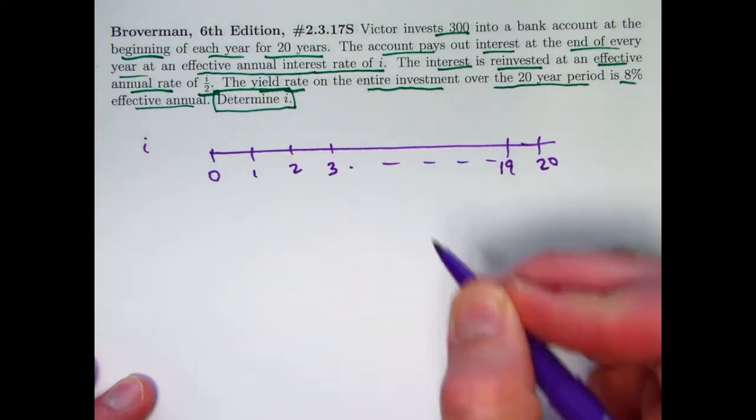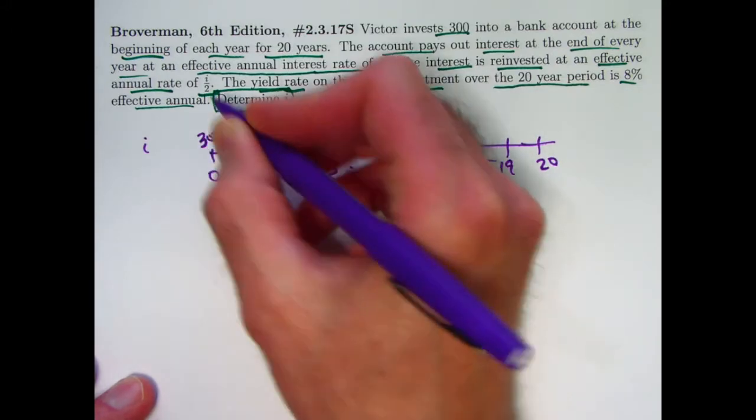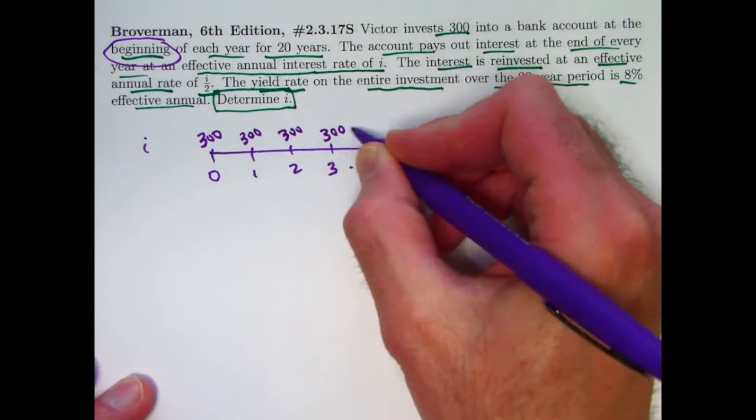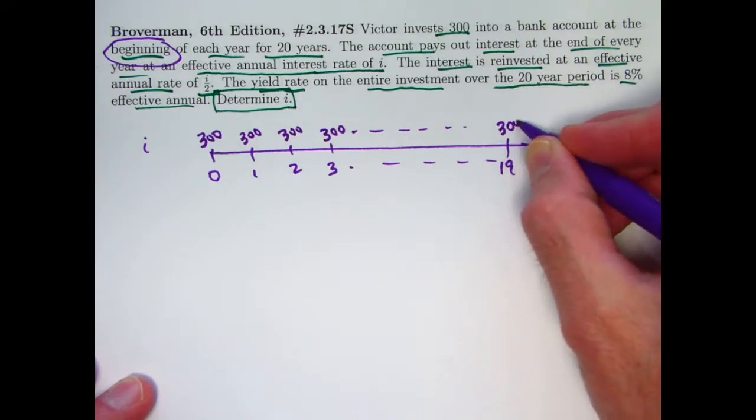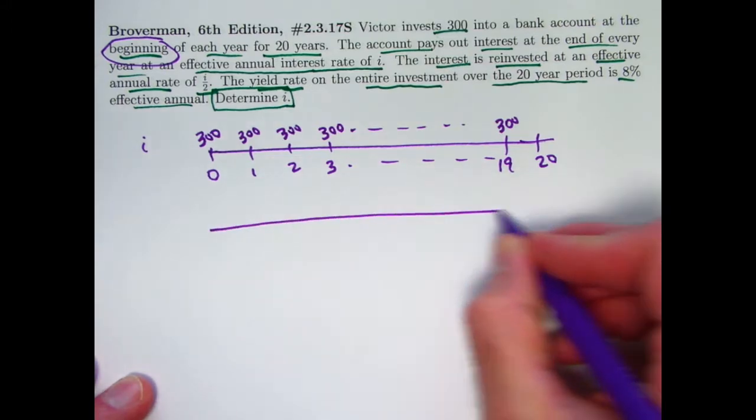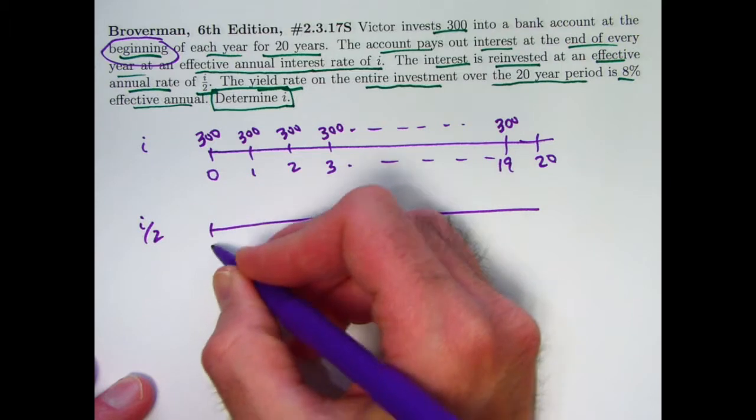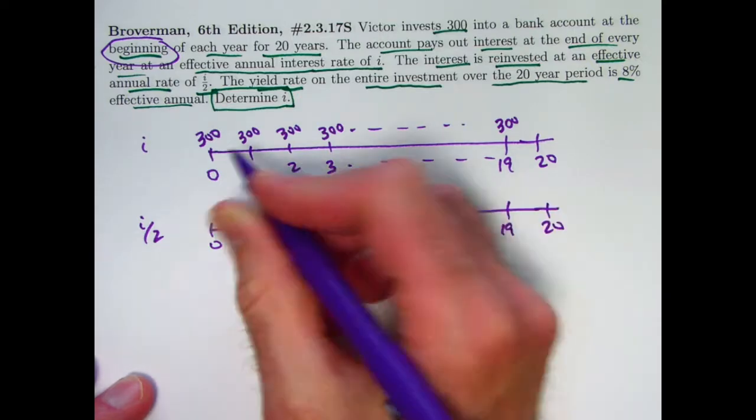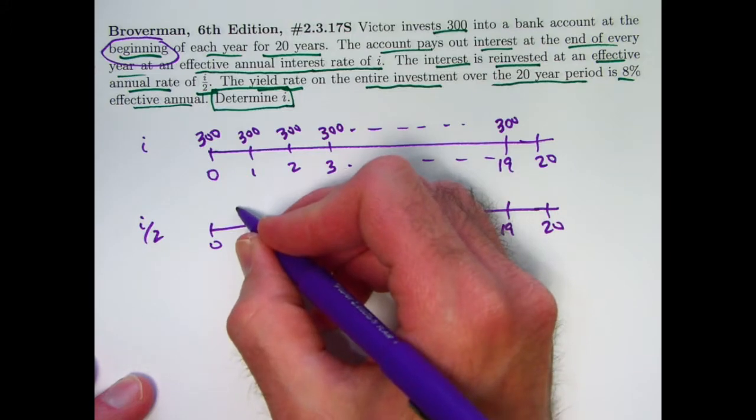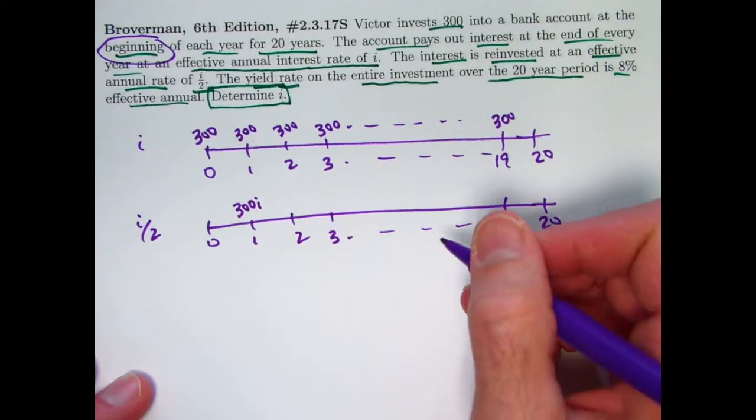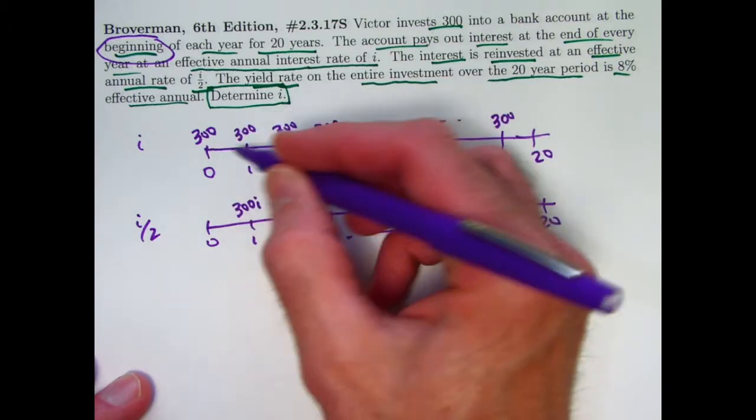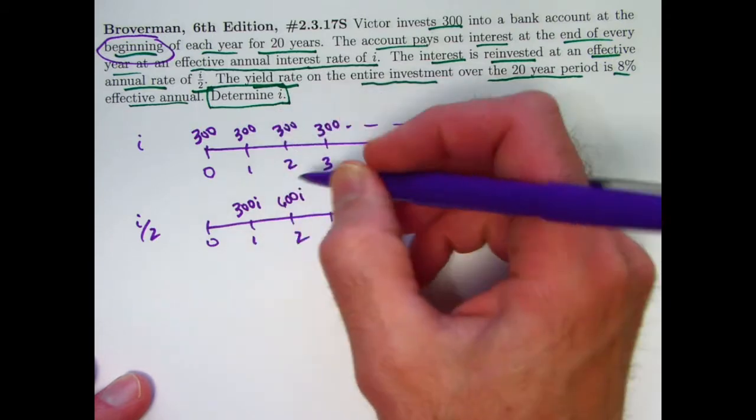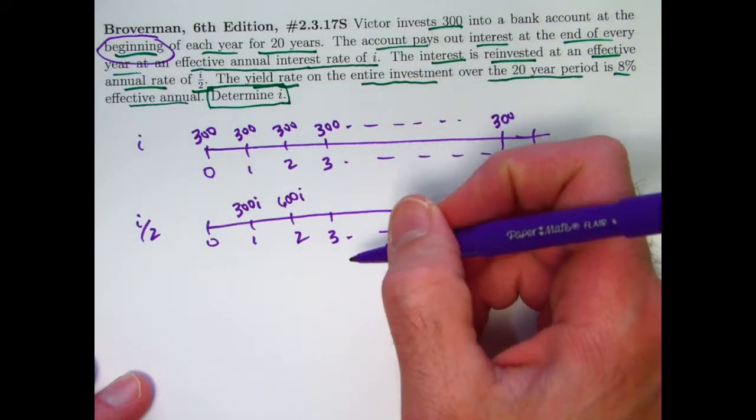Let's think of this as the first account with effective annual interest rate I. 300 gets deposited right away. These are at the beginning of each year. This is an annuity due for 20 years. So the last 20th payment will be 300 at time 19. But then you've got a reinvestment of interest into a different account with effective annual interest rate I over 2. The interest at time 1 from the first account is 300i. That's what gets deposited 300 times I into the second account at time 1. At the end of the second year you had 600 in account 1 that was growing. And so you're going to have 600i for the amount of interest that you earned from the first account at time 2 that gets deposited into the second account.